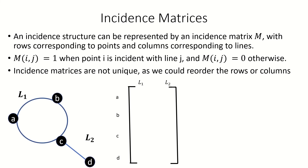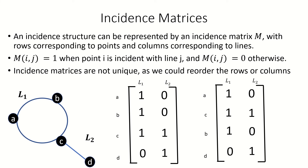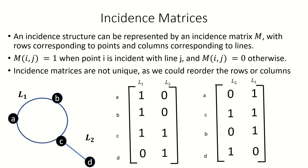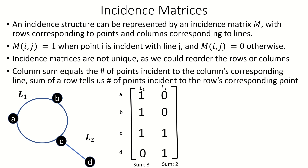As an example, let's find the incidence matrix of this incidence structure. A is incident to line L1 but not L2, so we fill in its row accordingly. C is incident to both lines, so its row will be all ones. D is incident to L2 but not L1, so we fill in its row and complete our matrix. By changing the order of rows or columns, we obtain another valid incidence matrix. The sum of a column tells us how many points are incident to that line, and the sum of a row tells us how many lines are incident to that point.